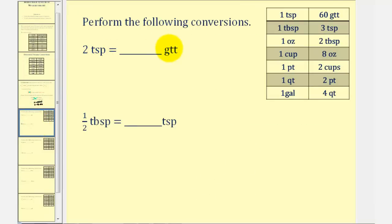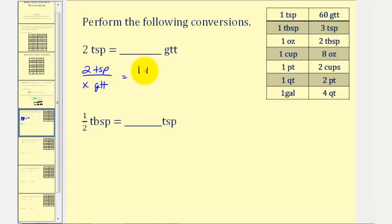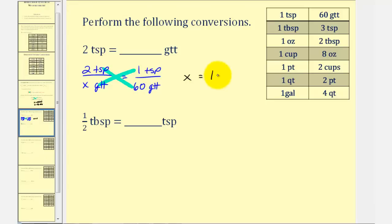Here we want to convert two teaspoons to drops, so we'll set up two ratios comparing teaspoons to drops using the unknown and one of our conversions. We'll have two teaspoons to an unknown number of drops must equal, looking at our conversions, one teaspoon to sixty drops. Notice how we have teaspoons on the top and drops on the bottom. Now we can cross multiply and solve for x. X times one, which is x, must equal two times sixty, which is one hundred twenty. Which means two teaspoons is equal to one hundred twenty drops.